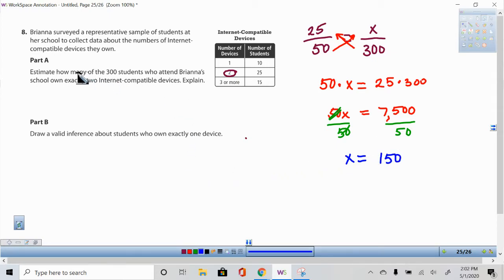So how many of the 300 students do we expect to have exactly two internet compatible devices? We expect to have 150 of these students. And I should put about here, because it's not going to be exact, but it's going to be close to 150 students. So it's going to be a proportion. And that's my answer.